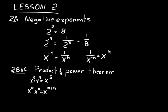The power theorem: if you had x squared in parentheses to the third power, that means you're multiplying x squared out three times. So x squared times x squared times x squared equals x to the sixth. You can also get it by multiplying the exponent 2 by the power on the outside: 2 times 3 is 6. So the power theorem is: x to the m, all to the power of n, equals x to the m times n.